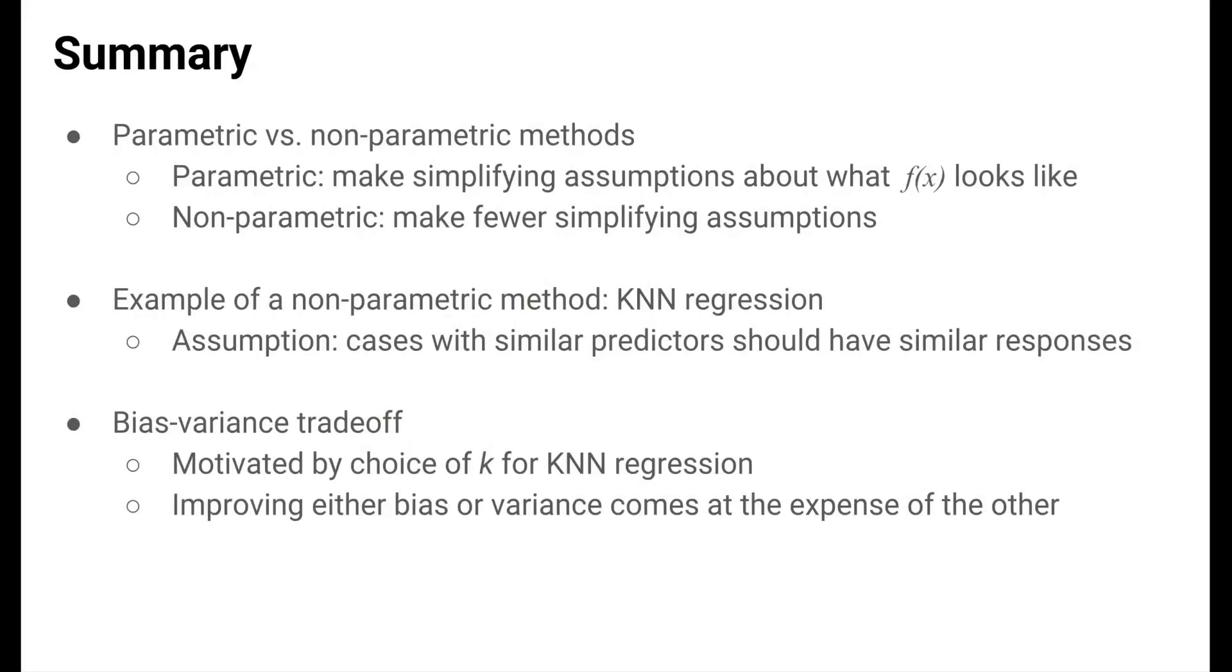In summary, we've introduced a distinction between parametric methods and non-parametric methods. Parametric methods simplify the task of estimating the function that relates the response to the predictors by assuming that the function looks a certain way. Non-parametric methods try to make fewer of those assumptions. We talked about a particular non-parametric method called k-nearest neighbors regression that only assumed that cases with similar predictors should have similar responses. We considered the difference in the estimated functions for different values of k, and we saw that this was a prime example of the bias-variance tradeoff phenomenon in machine learning. Varying a tuning parameter to decrease bias basically always increases variance and vice versa. Clever machine learning methods capitalize on this idea to decrease test error by balancing model flexibility.